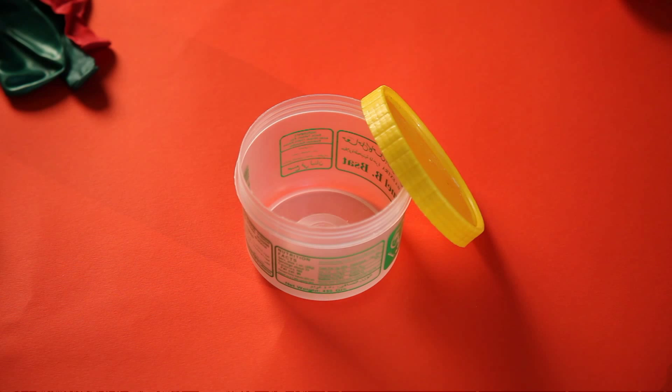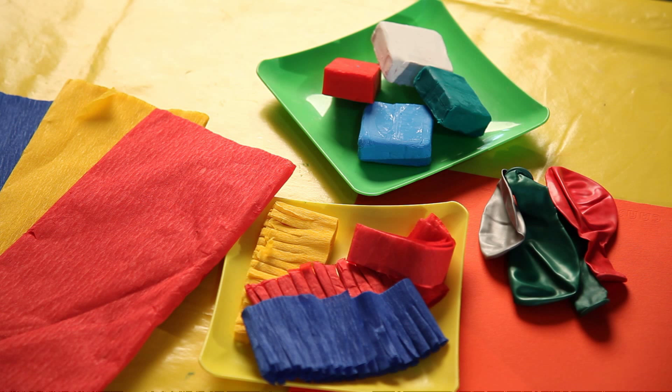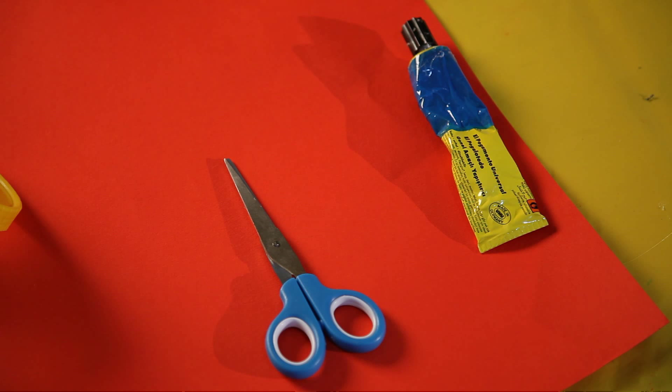We need a small empty halawa container, colored krep paper, balloons, clay, a wooden skewer, shiny colored ribbon, scissors, and glue.